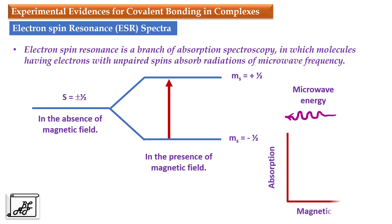Corresponding to this, when we plot a graph of absorption versus magnetic field, we get a smooth curve in electron spin resonance spectroscopy. In simple words, this is called electron spin resonance spectroscopy, where the molecules having unpaired electrons absorb radiation from the microwave region and show a smooth curve when we plot a graph of absorption versus magnetic field.